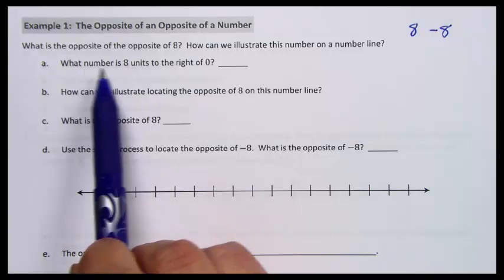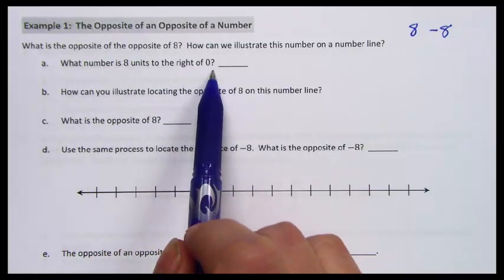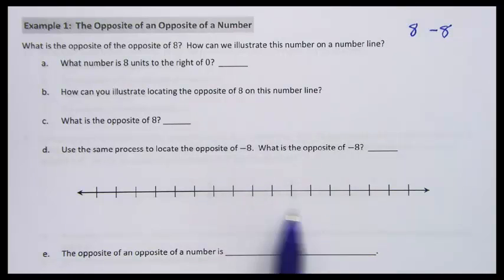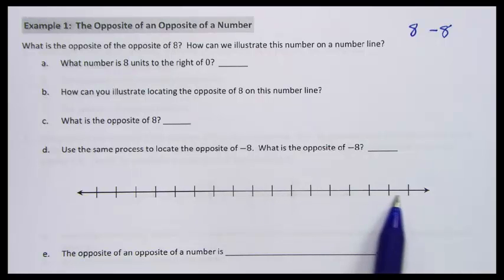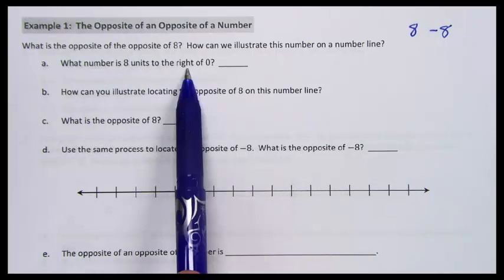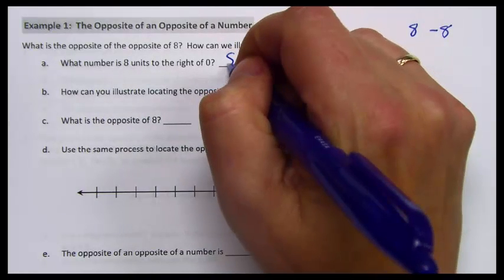Here is a question: what number is 8 units to the right of 0? If we imagine a number line, and we have 0 in the middle, if we're going to go right, we're going to go in the positive direction. So the number that is 8 units to the right of 0 is 8.